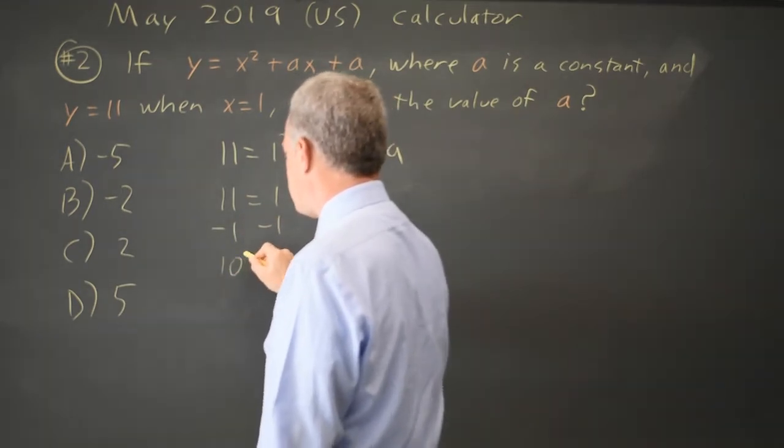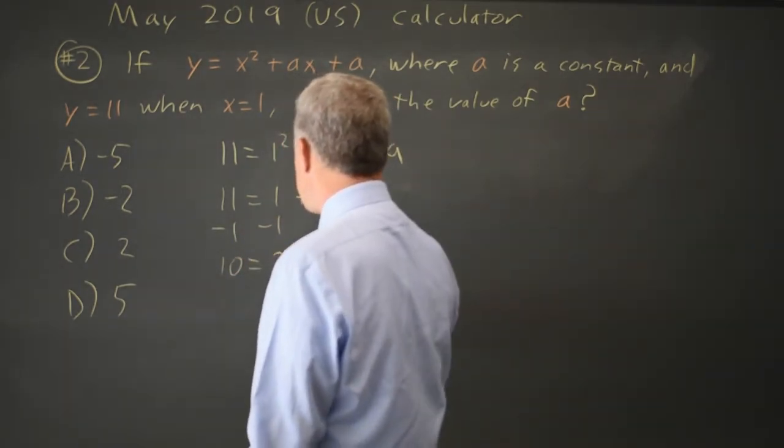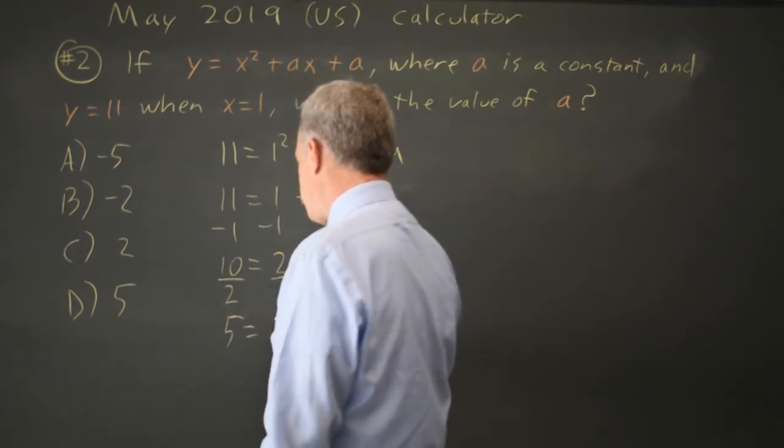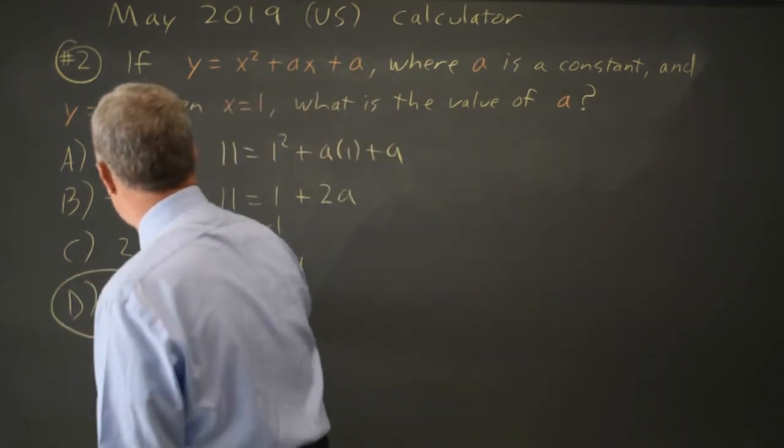Subtract 1 from both sides, always do the same thing to each side of the equation. 10 equals 2a. Divide both sides by 2 and I get 5 equals a, choice D.